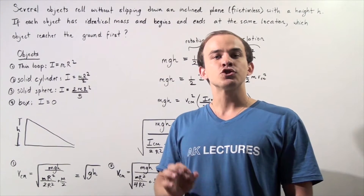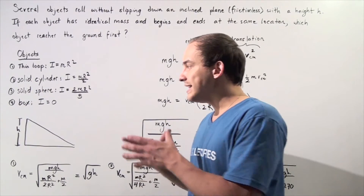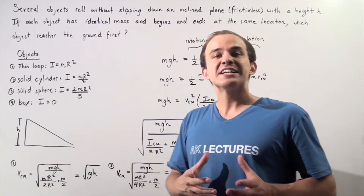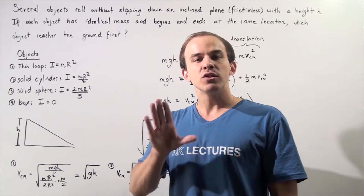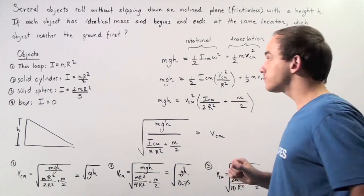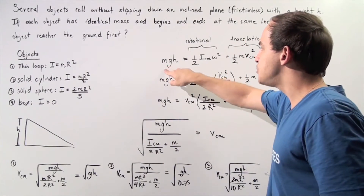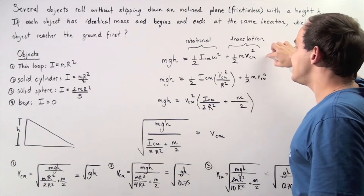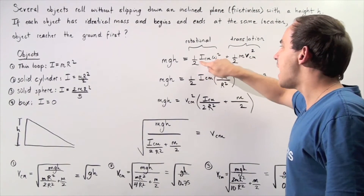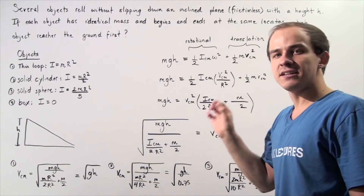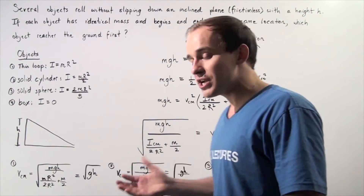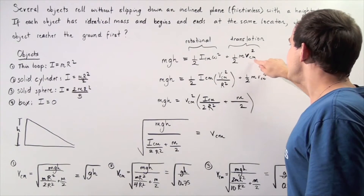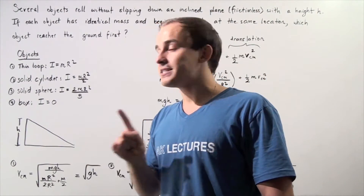Rotational kinetic energies as well as translational kinetic energies. In the beginning, we have gravitational potential energy, and at the end, all of that energy due to the gravitational pull of the Earth has been transformed into kinetic energy. Let's put that into equation form. Before the objects begin rolling, we have MGH. After our objects begin rolling, we have the rotational kinetic energy plus the translational kinetic energy. Rotational is given by one-half ICM omega squared, where omega is the angular velocity and ICM is the moment of inertia about the center of mass, plus one-half M VCM squared, where VCM is the linear velocity at the center of mass.